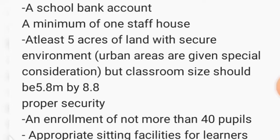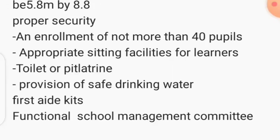A school bank account is necessary for a primary school. You need to show a minimum of one staff house and at least five acres of land with a safe environment, though urban areas receive special consideration. The classroom size should be 5.8 meters by 8.8 meters. Proper security is important. Enrollment should not exceed 40 pupils per class. There must be appropriate seating, toilet or pit latrines, provision of safe drinking water, a first aid kit, and a functional school management committee.